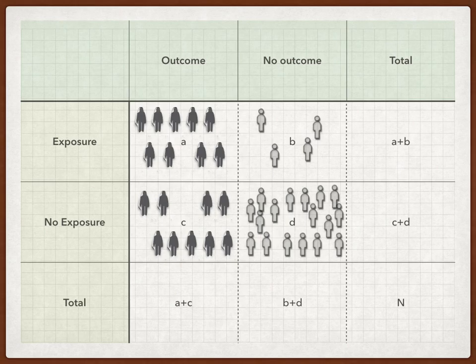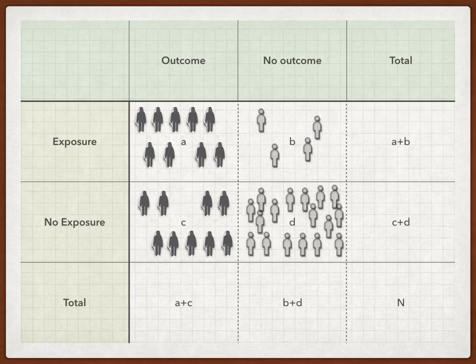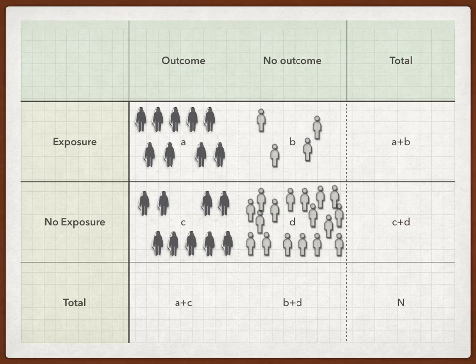If we assume this was a representative sample, we could calculate relative risk. The risk with exposure is 69%, and the risk without exposure is 35%, giving a relative risk of two. The odds ratio, on the other hand, gives us 9 outcomes in the exposure group relative to 4 that don't develop the outcome — 9 to 4, or 2.25 to 1. In the non-exposed group, 9 develop the outcome for 17 that don't, giving an odds of 0.5, yielding an odds ratio of 4. So our relative risk was 2, our odds ratio was 4.